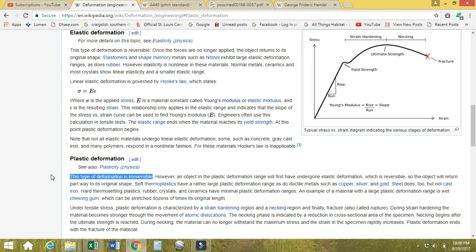Elastic deformation - here, this is key. This type of deformation is reversible. Basically, when a load is applied to a metal in the elastic range, it recovers back to its original shape. The corollary to that would be plastic deformation, where this type of deformation is irreversible. Soft thermoplastics have a rather large plastic deformation range, as do the ductile metals such as copper, silver, and gold. Well, I think that's our answer.